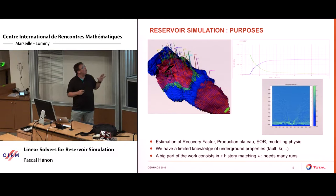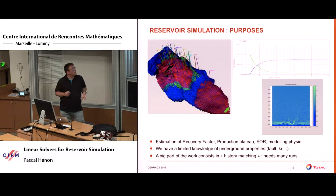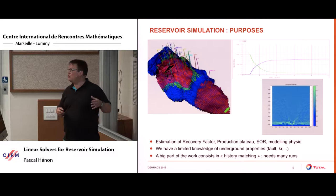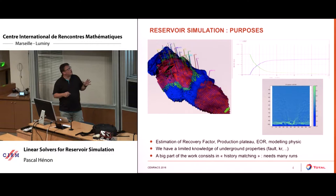What we try to do is to match our numerical models with what we have observed on the field. We usually have a long history of data concerning each well. On this history, we try to match the result by adjusting the different properties of the reservoir to match the simulation results to the realistic measurements. This is what we call the history matching.